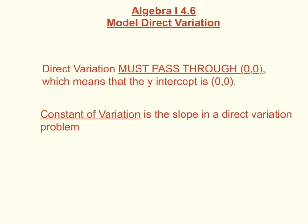The two huge things that you have to know about direct variation is that direct variation graphs must pass through 0, 0, which is the origin, which means that the y-intercept is 0 every single time.